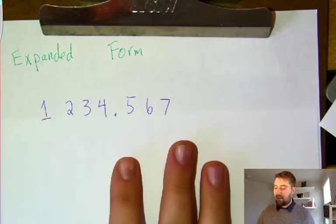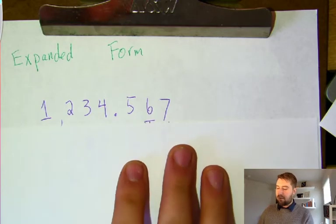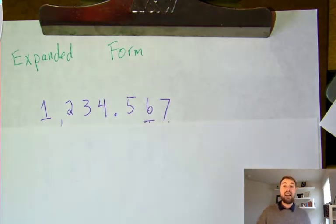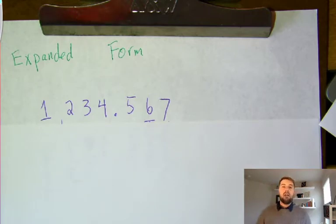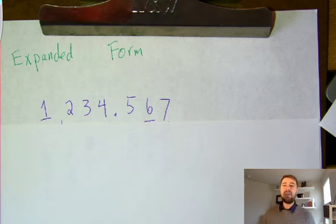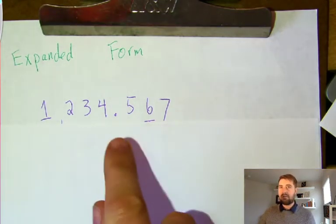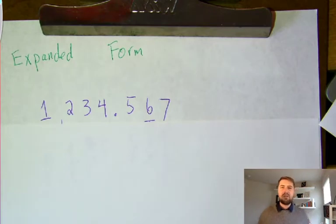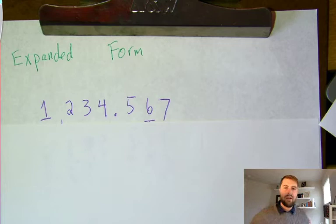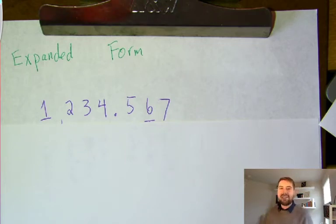I want to start us off with my favorite number right now: 1,234,567.000. I want you to label each of those place values—what the 1 is, the 2 is, the 3 is, the 4 is, the 5 is, the 6 is, the 7 is. Label what each of those place values are; that's going to help us review. Pause the video, unpause when you've got them labeled, then check your work with me.